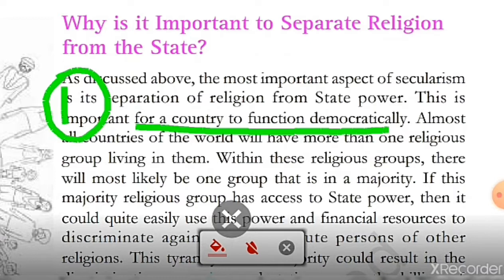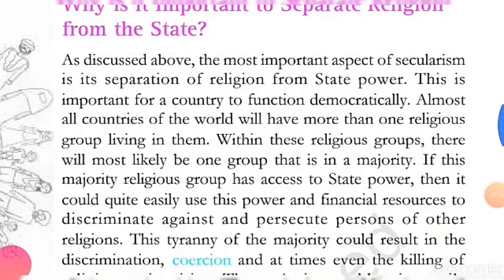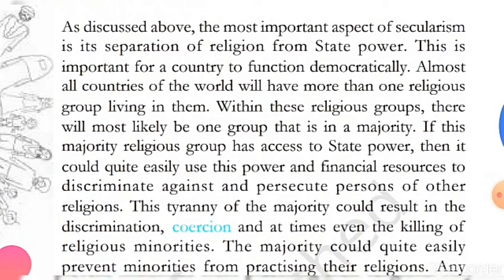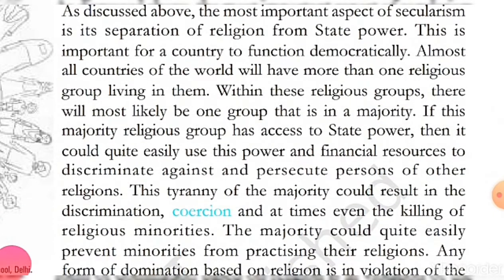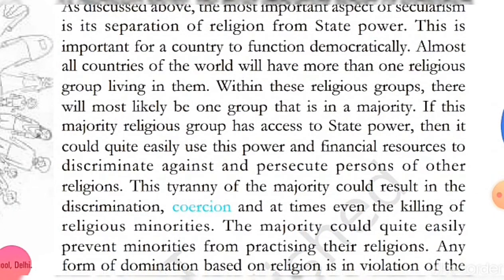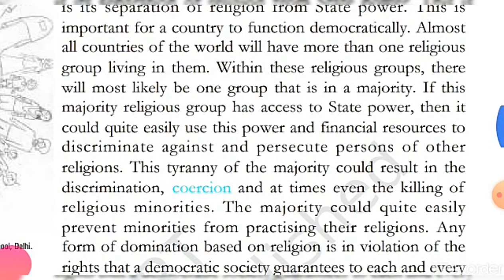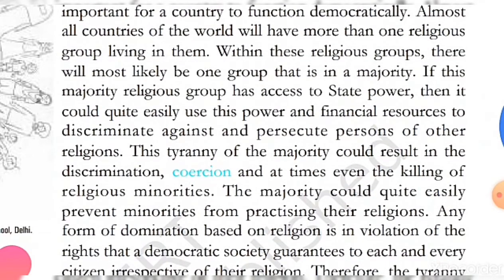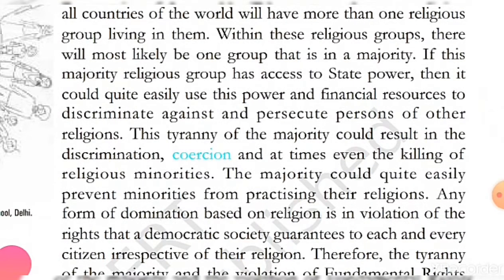Let us understand with an example. Within religious groups, there will most likely be one group that is in a majority. If you are in a democratic state, then one religion will be in the majority. If this majority religious group has access to state power, then it could quite easily use this power and financial resources to discriminate against and persecute persons of other religions.